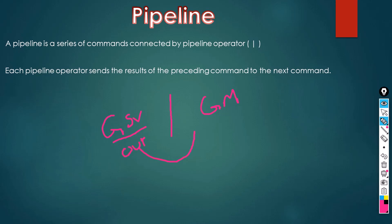That output is passed as input to the next command in the pipeline, which is Get-Member. Get-Member takes that input, analyzes the information, and its default behavior is to read the data and tell you the type of information, and for that type, what are the properties and methods. So the output on the console shows that the type is ServiceController with these methods and properties.